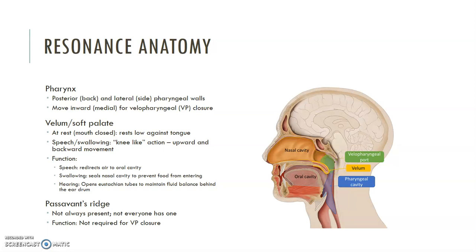During resonation, to direct airflow or sound into the nasal cavity, the back and sides of the pharyngeal walls squeeze together towards midline, and that gives our side and back of our velopharyngeal closure. The velum at rest is open and resting low against the tongue. During speech and swallowing, the nasal side of the velum lifts and goes backwards towards the back of the pharynx in a knee-like action, sealing off the nasal cavity. So we really have four sides: the back and left and right side for the pharynx, and the front of that velopharyngeal port created by the velum.